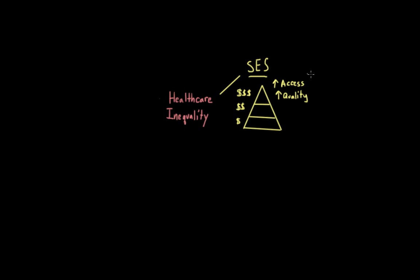And related to this, the health of those people at the top of the pyramid tends to be better as well. But the opposite is actually true for those at the bottom of the pyramid. And there are a number of reasons as to why this might be.